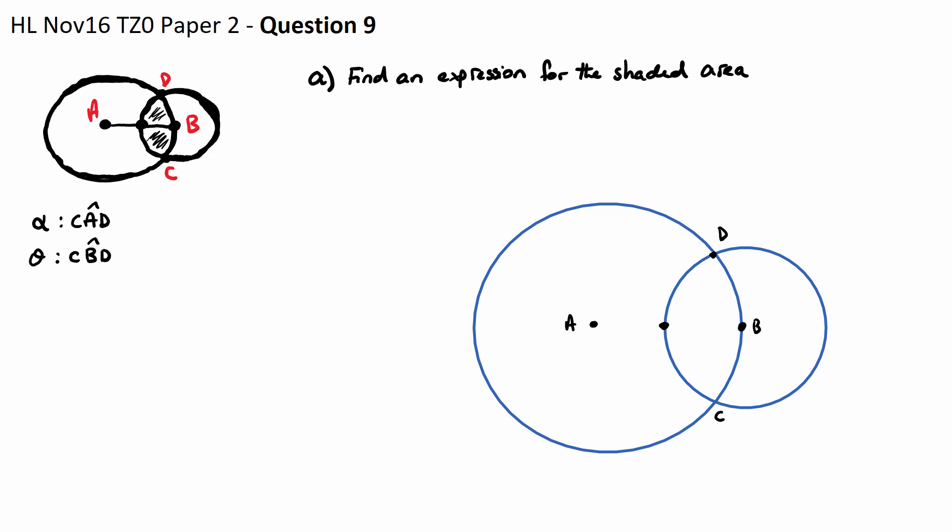Question 9, we have a diagram here. I've drawn it twice because I'm going to do some explaining with this bottom right one. We have two circles - the big one with radius 2r and the smaller one with radius r - intersecting at D and C.